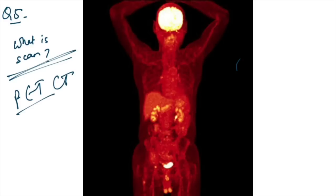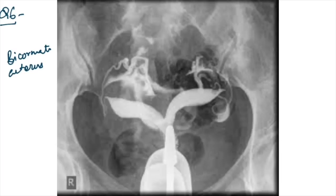HSG image given. This is bicornuate uterus was the answer. This is bicornuate uterus or septate uterus. This was the answer and this HSG image was given to identify.